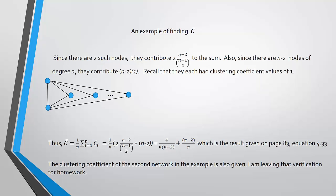Since there are two nodes that have clustering coefficient n minus 2 over n minus 1 choose 2, when we find the sum of all clustering coefficients, two nodes contribute that amount to the sum. We also have n minus 2 nodes that each contribute 1 to the sum. So the sum can be represented in two parts: the total for the two high-degree nodes plus the total for the n minus 2 nodes of degree 2. This leads to the result given on page 83, equation 4.33.